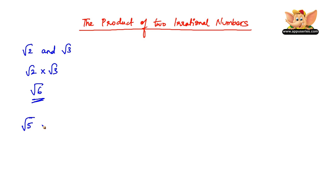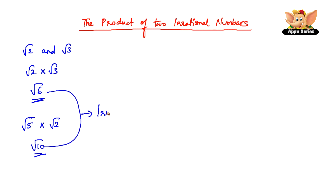Root 5 into root 2 is root 10, which is irrational. So we can see that these two products are irrational.